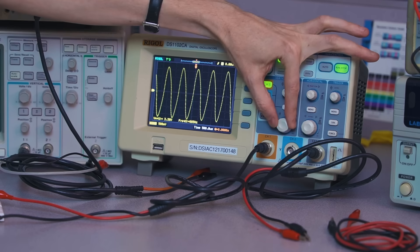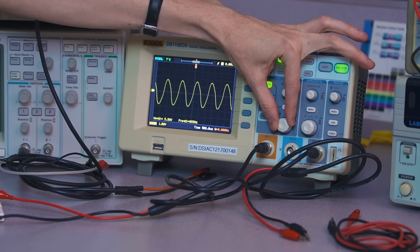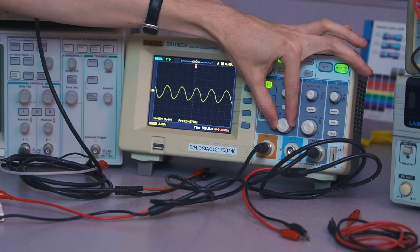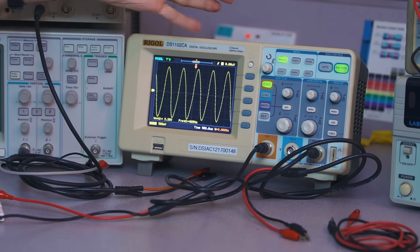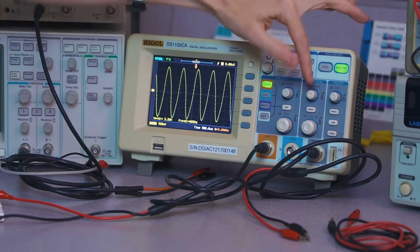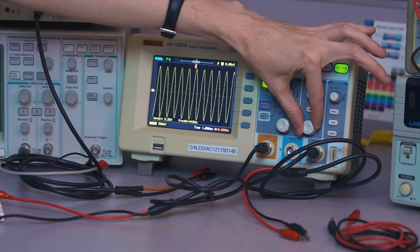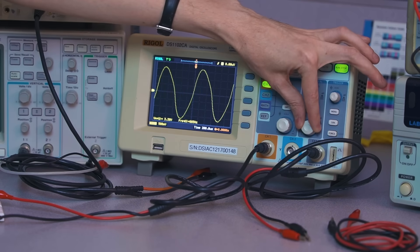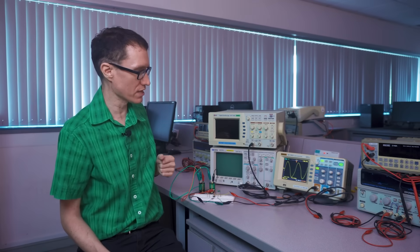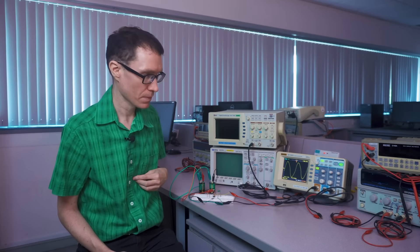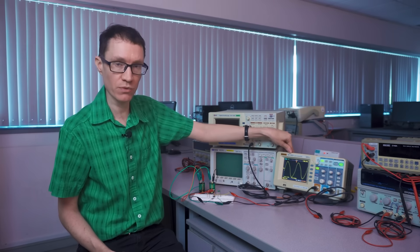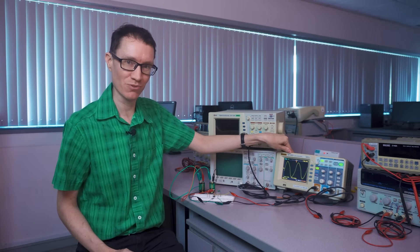If I change the scale here on the vertical settings, I can change how large the signal displays. It doesn't change the actual voltage though, it just changes how the display is scaled. Likewise with the horizontal settings, I can make the display stretch out horizontally, but it doesn't change the actual frequency of the signal. It just changes how it's displayed. I'm going to shut down this oscilloscope and we're going to make the same set of measurements here on a slightly older oscilloscope.